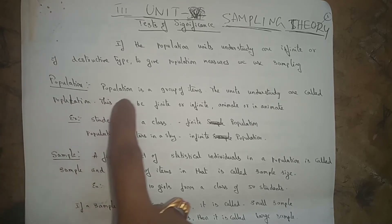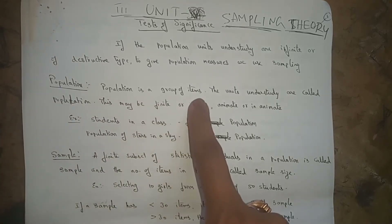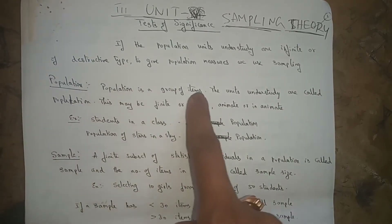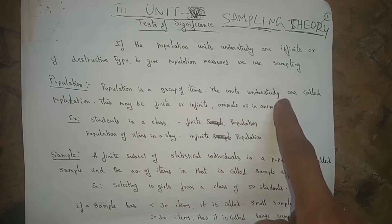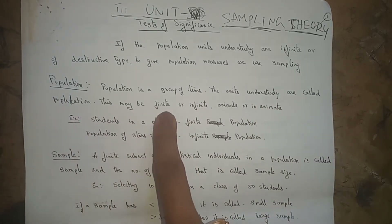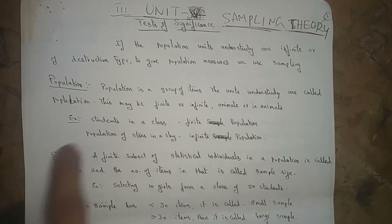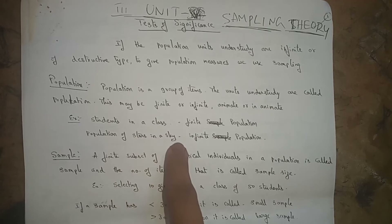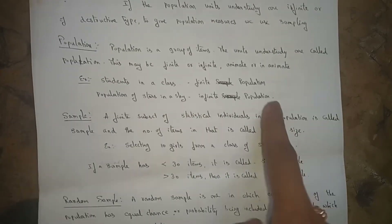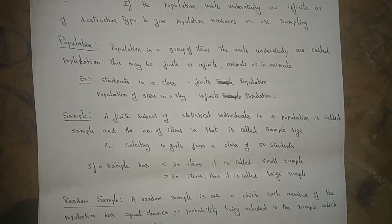What is meant by population? Population is a group of items — the units under study are called population. This may be finite or infinite, or animate or inanimate. An example of a finite population is students in a class. An example of an infinite population is the stars in the sky.